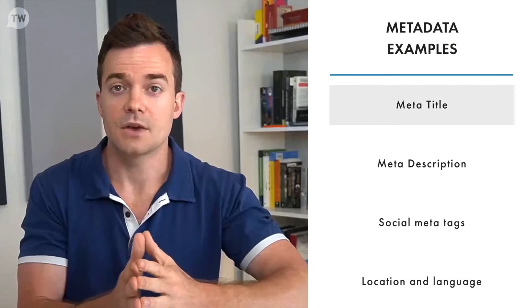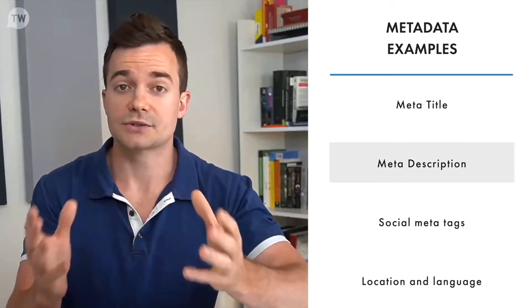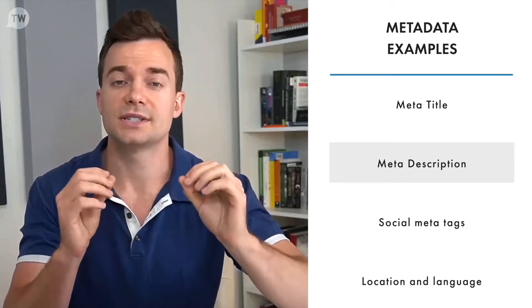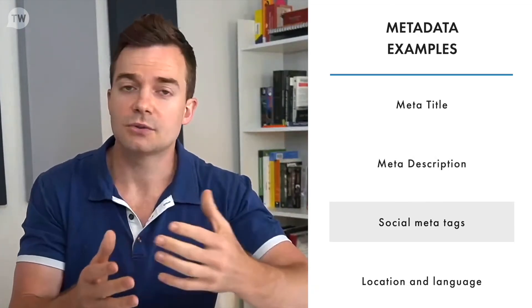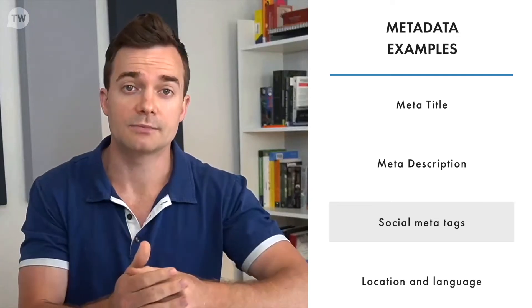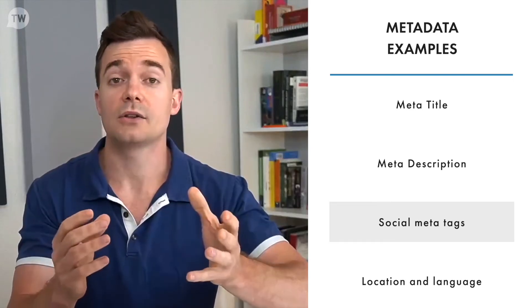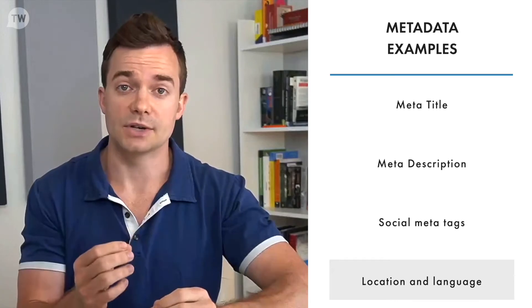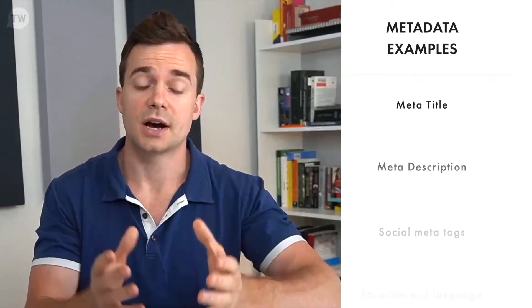For a webpage, some of those items are as follows, and you might have seen these already. You have your meta title — a descriptive title defining what the website is about — and meta description, a longer-form description of the content, often an introductory snippet of the page. You also have social media tags: Twitter, Facebook, and other social platforms use specific meta tags so you can control how a post's image, title, and description will appear on those platforms when shared.